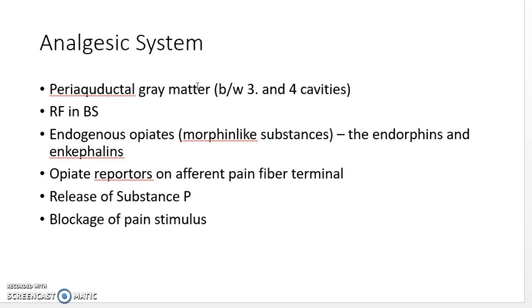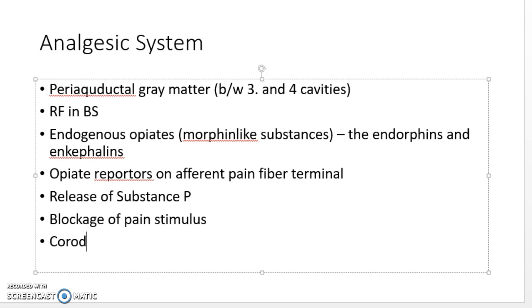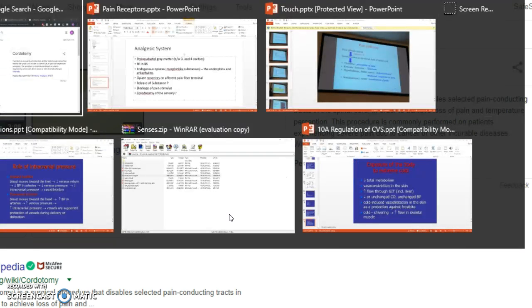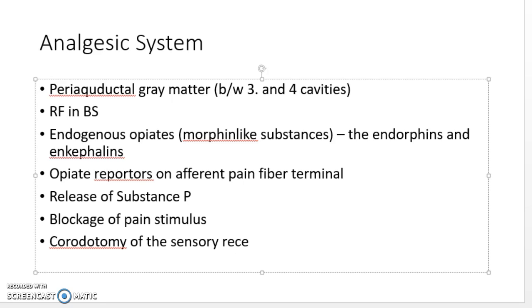The hyperalgesia phenomenon means continuous pain increases your threshold — essentially making you more resistant to pain over time. Pain can also be caused by substantial heat due to tissue damage above 45 degrees Celsius, and is correlated with the rate at which tissue is being degraded. To suppress pain, opiate-like structures can be placed on the afferent neuron receptor to block pain stimulus. Another method is a surgical procedure called cordotomy, which disables selected pain-conducting sensory tracts.